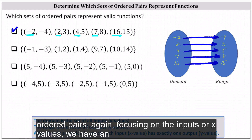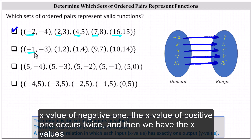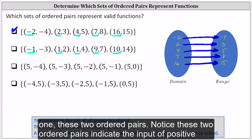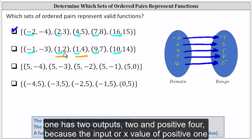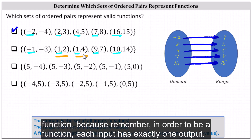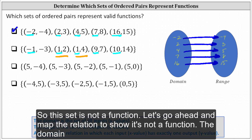Looking at the next set of ordered pairs, again focusing on the inputs or x values, we have an x value of negative one. The x value of positive one occurs twice, and then we have the x values of nine and ten. Notice these two ordered pairs indicate the input of positive one has two outputs: two and positive four. Because the input or x value of positive one has two corresponding outputs or y values, the set of ordered pairs is not a function. In order to be a function, each input must have exactly one output.